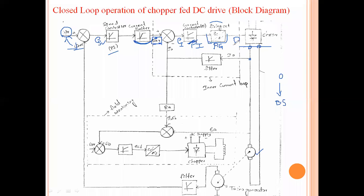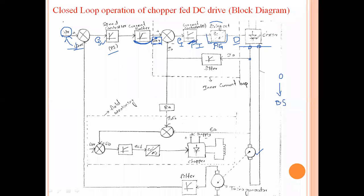If this duty ratio is modulated, the chopper's operating time period will also be modified. If the chopper's operating time period is modified, then the output produced across the motor terminals — which is E_A and I_A — will both be modified accordingly. This is how the motor will change its speed or torque according to the given conditions.